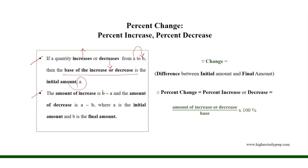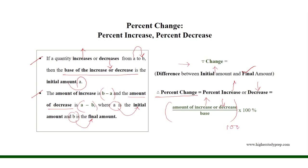The amount of increase is B minus A, and the amount of decrease is A minus B, where A is the initial amount and B is the final amount. The change equals the difference between the initial amount and the final amount. So the percent change — percent increase or decrease — equals the amount of increase or decrease over the base times 100%, where the base is the initial amount.